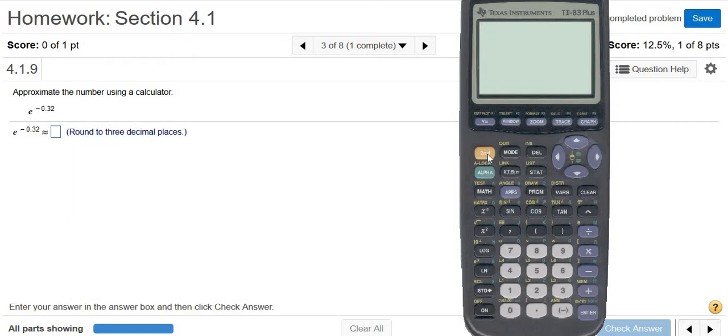Let me do that again. Clear. 2nd, ln. And it gives us the exponent key for us. That's called the caret key and the parentheses.